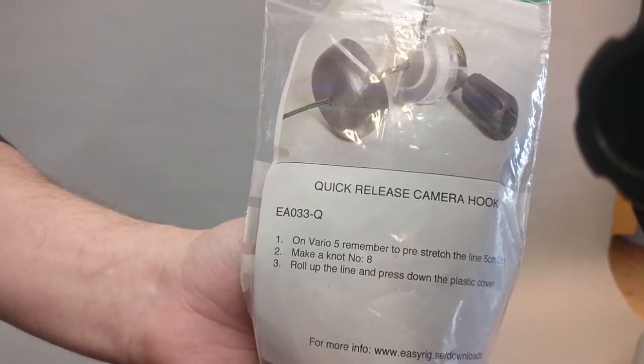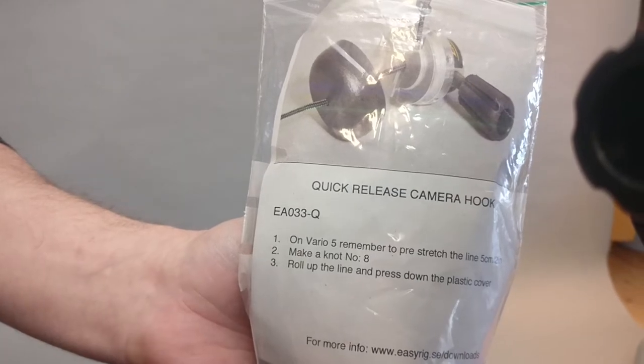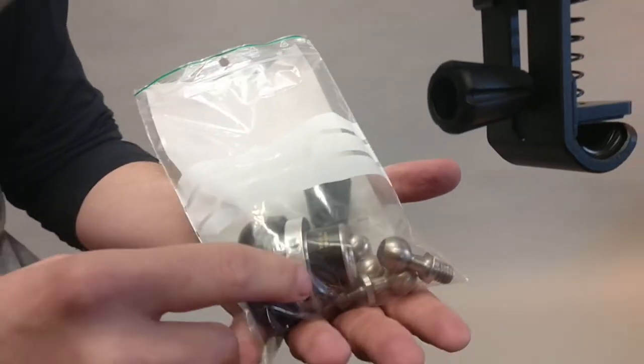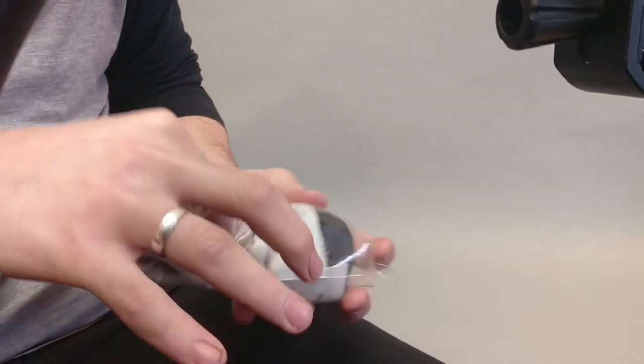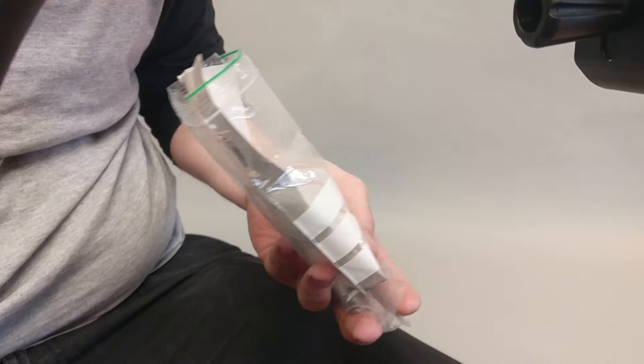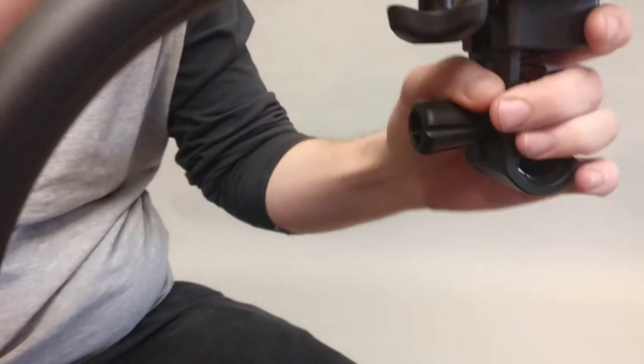So this is the new quick release and I'm going to show you how to assemble it to the easy ring. It comes with four bolts and the quick release.